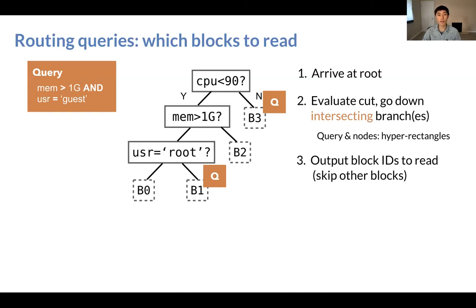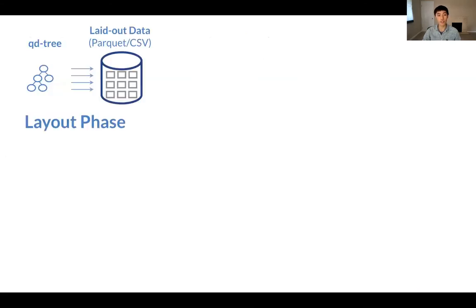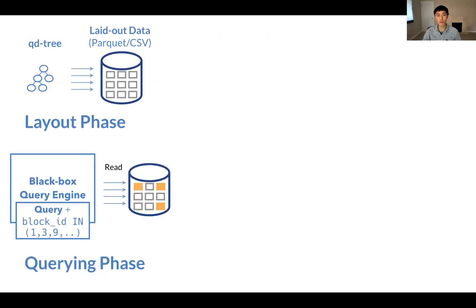So to summarize, the output of routing queries is a list of block IDs. Now we can take an original query and inject this list as an additional in-filter so that any query engine can run this rewritten query and enjoy the benefits of QD-tree layouts.